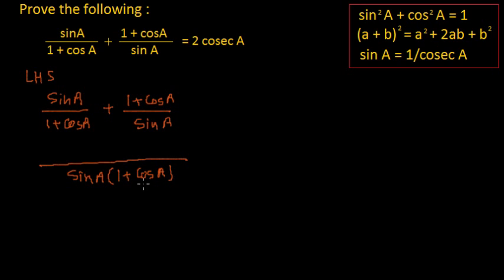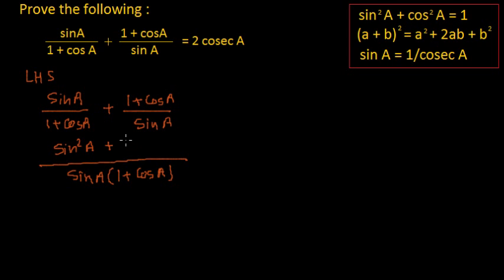Sine a multiplied by 1 plus cos a divided by 1 plus cos a will give you sine a. Sine a multiplied by sine a will be sine square a. And this LCM divided by sine a will give you 1 plus cos a. And 1 plus cos a multiplied by 1 plus cos a will be 1 plus cos a whole square.